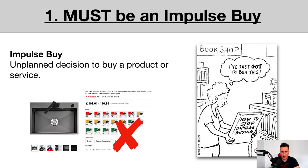Point number one: the product you pick to advertise using Facebook must be an impulse buy. By definition, an impulse buy is an unplanned decision to buy a product or service. Take a kitchen sink sourced from AliExpress as an example — people don't buy a new kitchen sink on impulse. It's usually a decision they'll think about for days, if not weeks or even months. They may even have to save up for it. So trying to get somebody to buy an expensive sink on impulse is going to be really difficult.